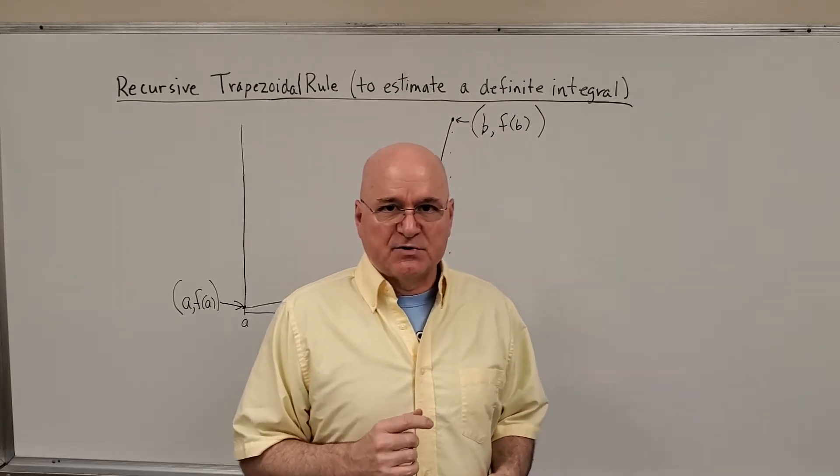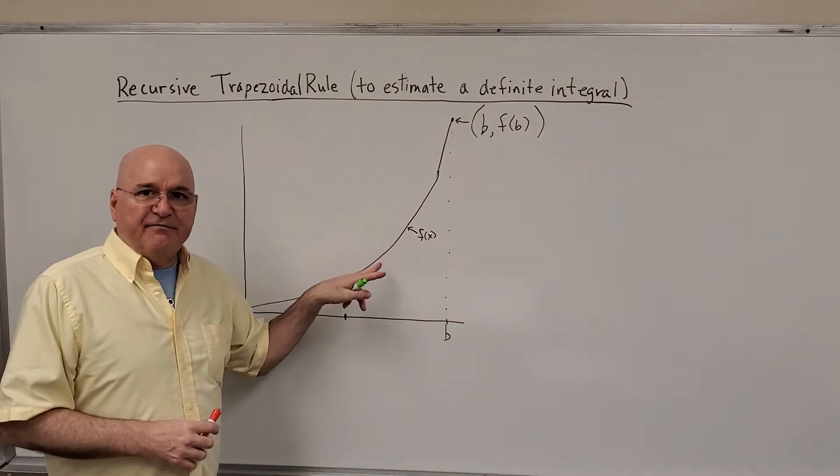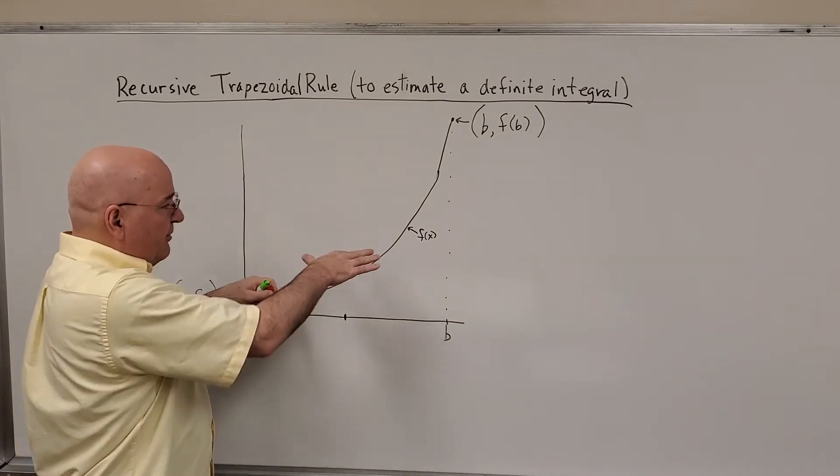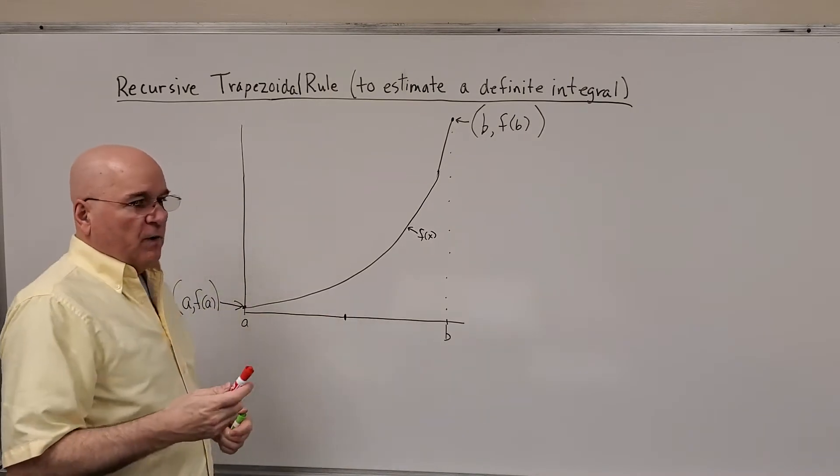Let's review a little bit about what the trapezoidal rule says. Let's say this is our function f, and we want the area under the curve. We want the integral of that function from a to b.